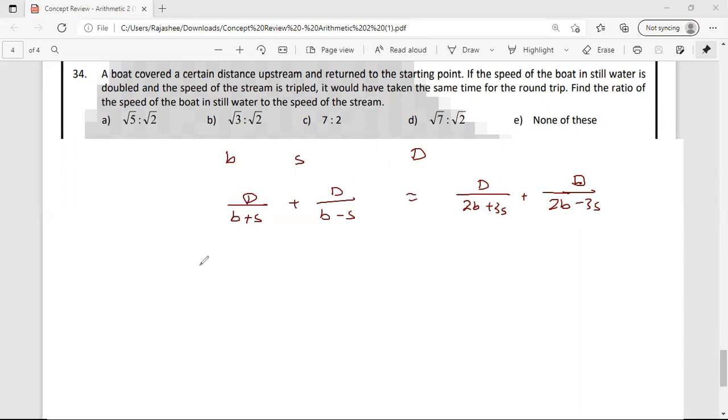First of all, I can cancel D from the entire numerator by taking common. So after removing D, denominator looks like B square minus S square, numerator looks like B plus S plus B minus S. S has cancelled. So that is 2B.